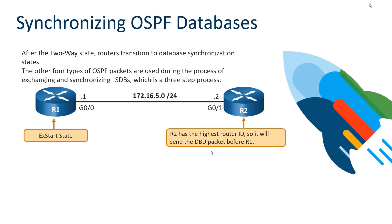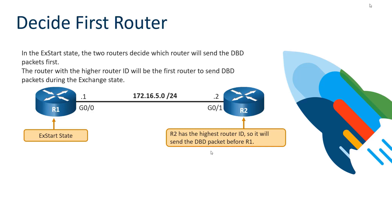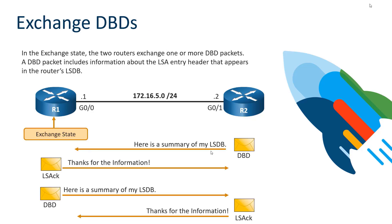Our routers then move on from the two-way state and the election to the synchronization process for their OSPF database — specifically, synchronizing their link state databases, which is their topology table. To start this, we use the xstart (exchange start) state. In the exchange start state, routers choose who will share their link state database first. That database is shared as a DBD (database description) packet — a summarized form of the link state database. The router with the highest ID sends its DBD packet over to R1, and R1 acknowledges receipt of that summary.